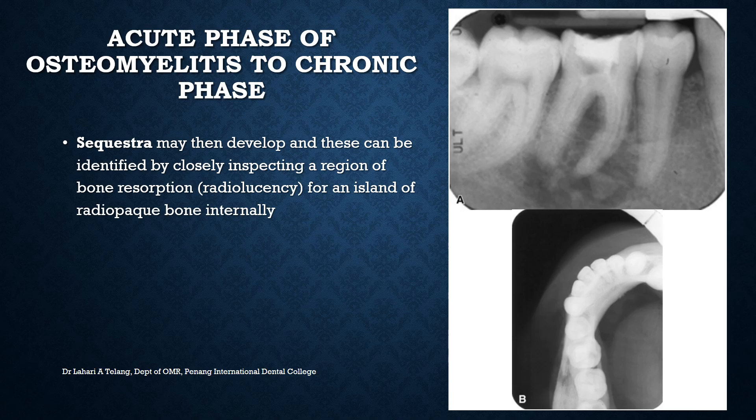Moving on to osteomyelitis, which is virtually the end of the sequelae of dental caries. The acute and chronic phases of osteomyelitis have different radiographic appearances, but there is a larger area of involvement compared to a periapical abscess or rarefying or condensing osteitis. There is new bone formation as well as dead bone seen in osteomyelitis. These images show a mixed radiopaque-radiolucent appearance, and the radiopaque areas are sequestra — islands of radiopaque bone within a large radiolucency — which is a typical appearance of osteomyelitis.